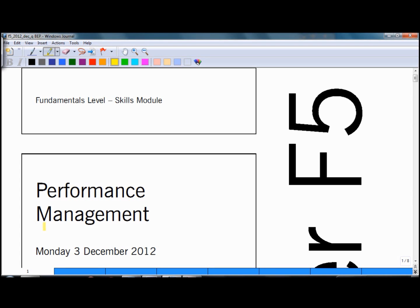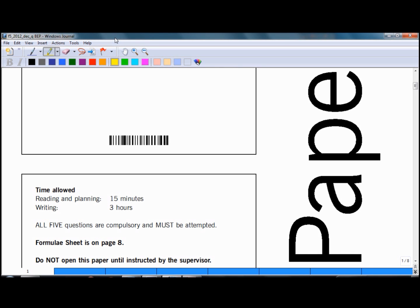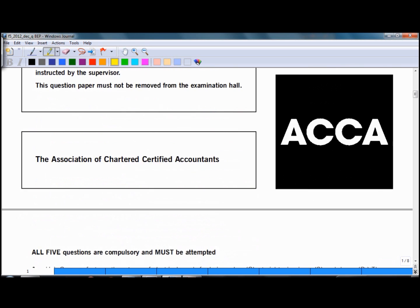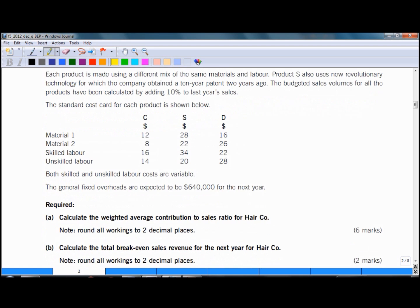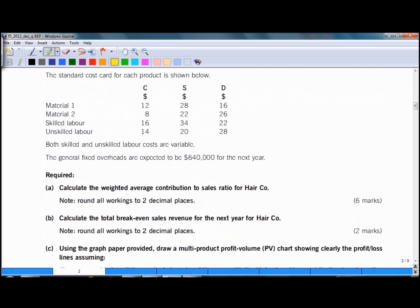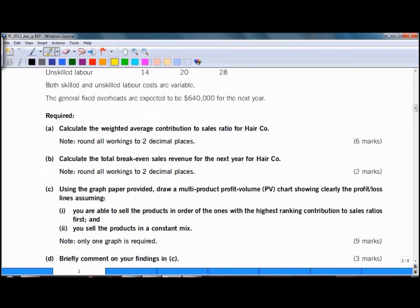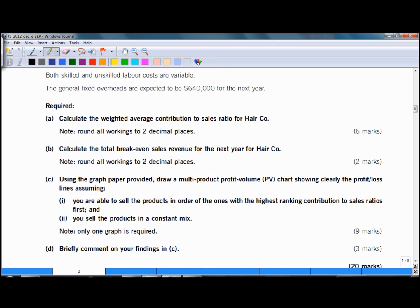Hello! In this tutorial we will look at question number 1 from December 2012 paper which examines breakeven analysis. In your reading time you will have 15 minutes to analyze your question. Start by reading the requirements first. It has 4 requirements and it starts with calculating contribution to sales ratio which is a simple formula.